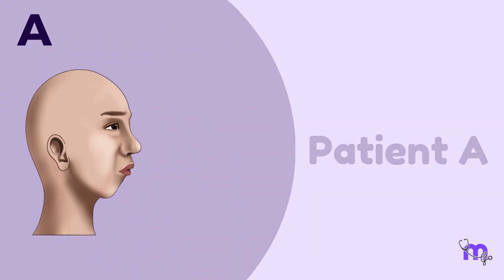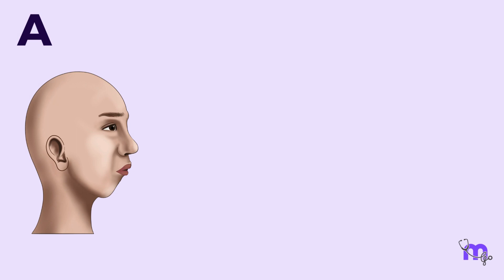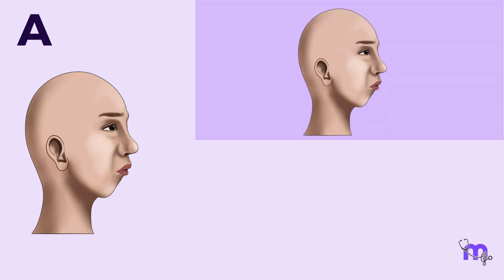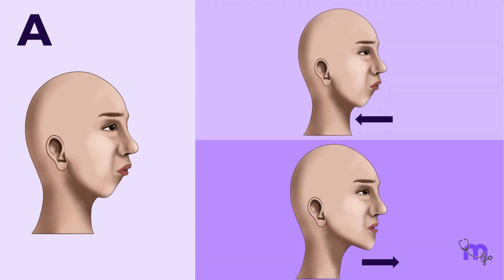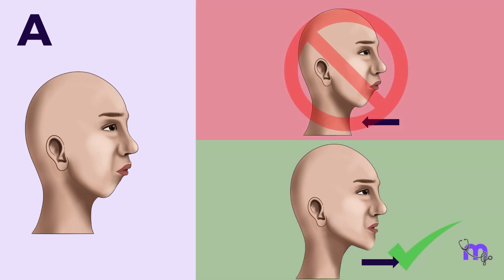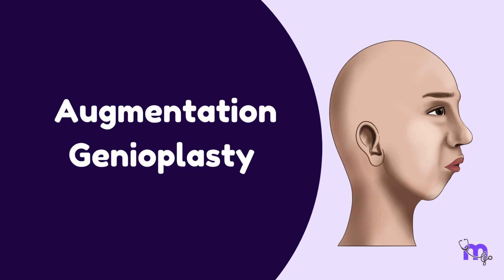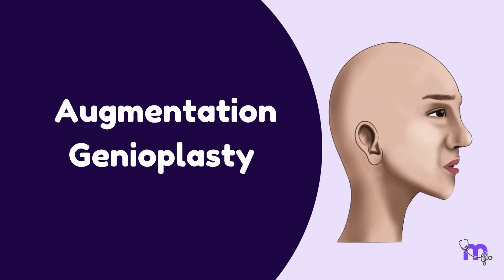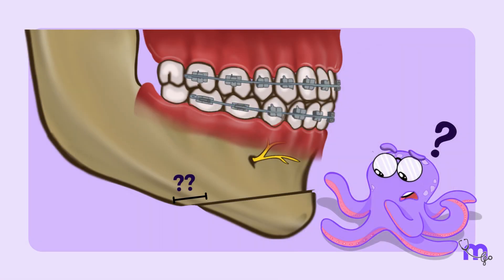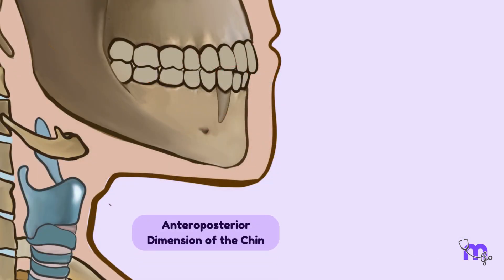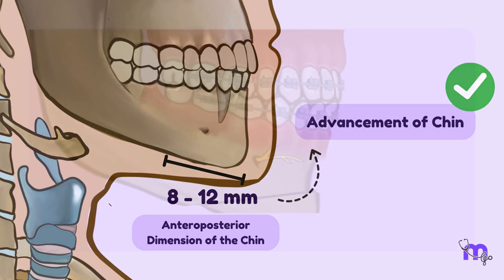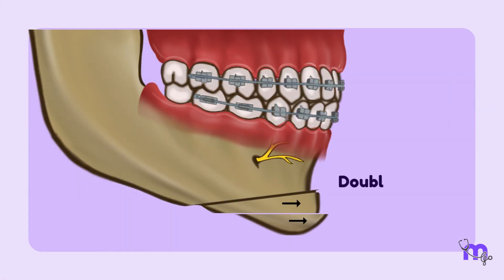Have a look at patient A. To improve his appearance, would you push his chin further back or try to bring it forward? In this case, we will augment his chin with augmentation genioplasty. It is used to increase the projection of the chin. The normal anteroposterior dimension of the chin is 8–12 mm, and this same amount of advancement can be achieved. If there is difficulty in advancement, a double sliding genioplasty can be done or grafts can be placed.